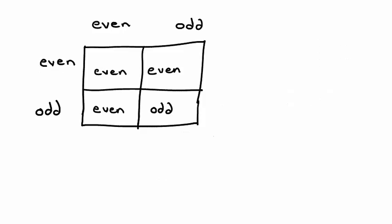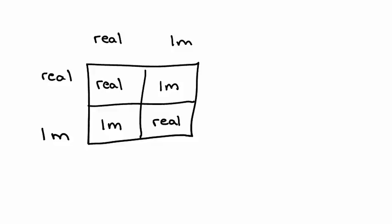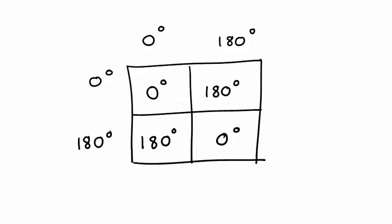For number 1, the even and odd numbers with multiplication is not a different representation of this group. Even times even is even, odd times even is even, even times odd is even, and odd times odd is odd — this does not follow the ABBA pattern. For number 2, the real numbers and imaginary numbers with multiplication is a different representation of this group: real times real is real, imaginary times real is imaginary, and imaginary times imaginary is real. For number 3, we see the same pattern with 0 degree and 180 degree rotations.